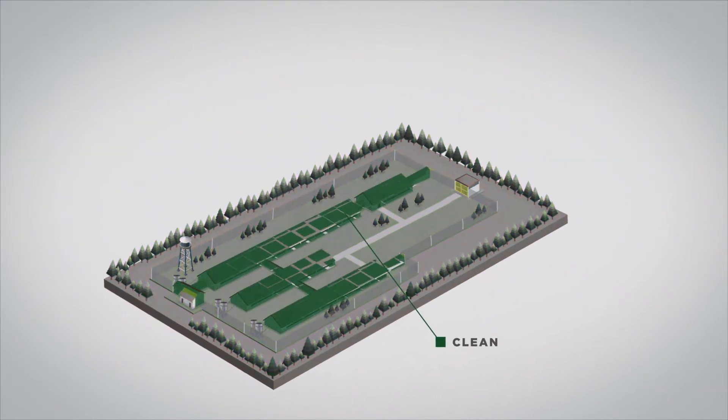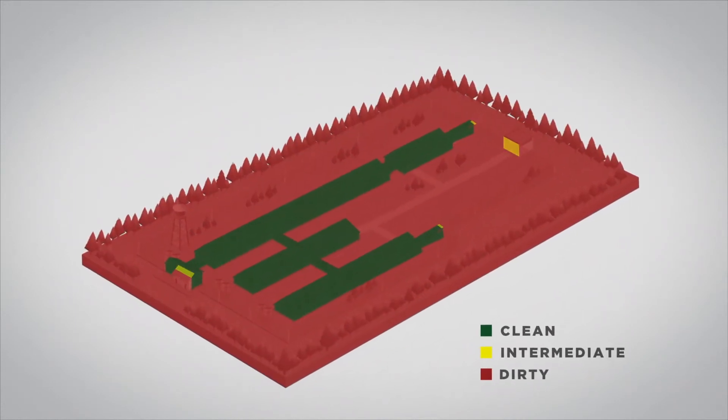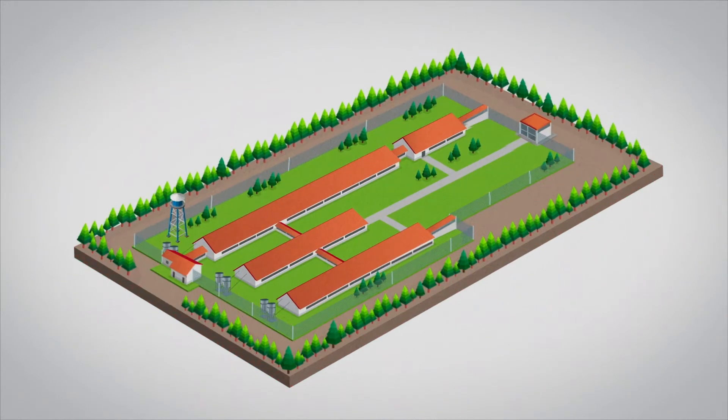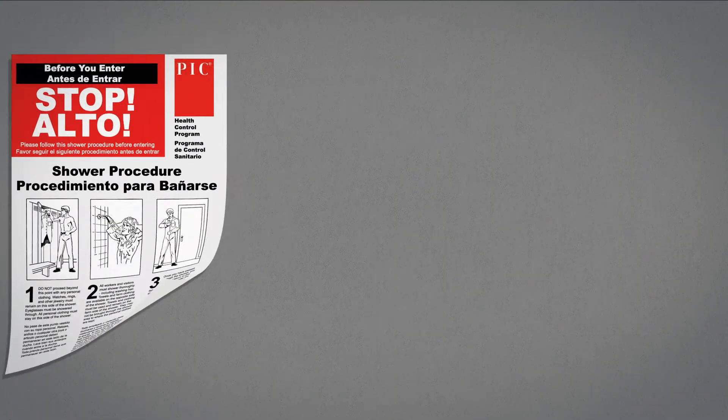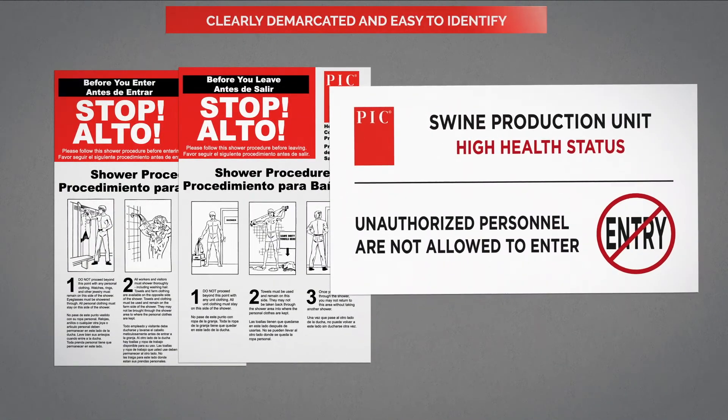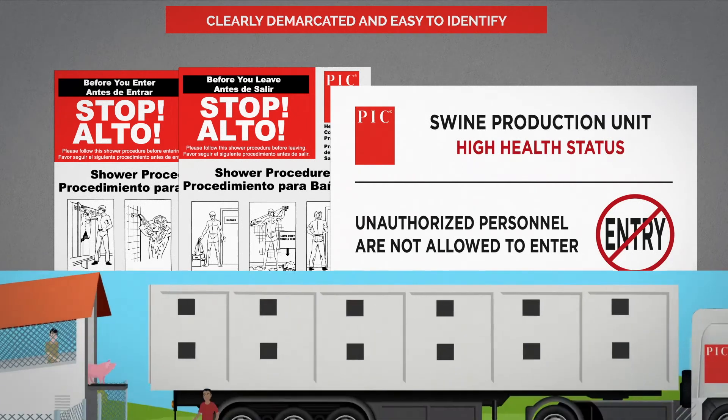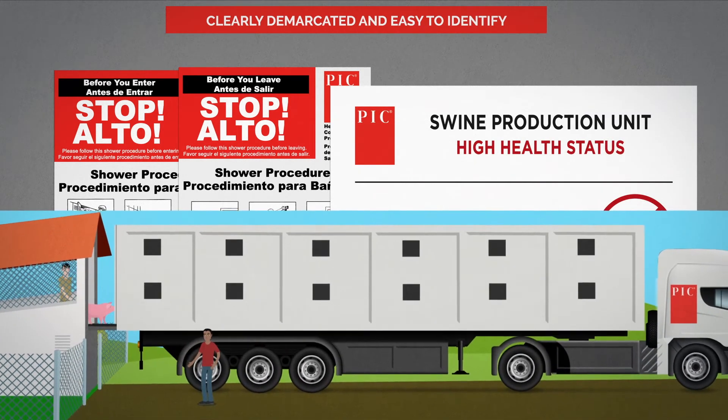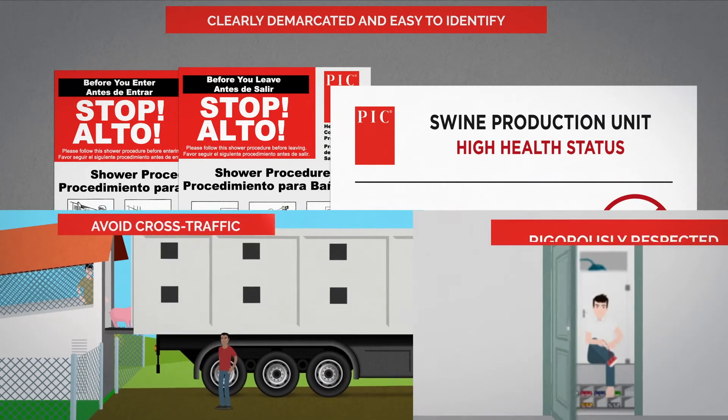Therefore, the clean-dirty line defining these areas must be clearly demarcated, obvious, easy to follow during farm routines, logically designed to avoid cross-traffic, and rigorously respected.